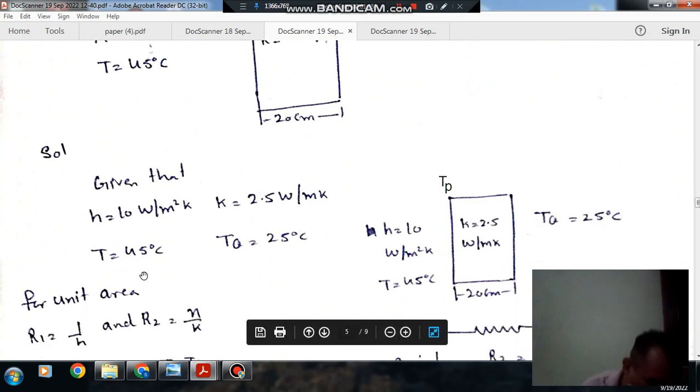Now assuming unit area, H is 10, temperature of fluid is 45, and temperature of surface Q is 25 degrees Celsius.